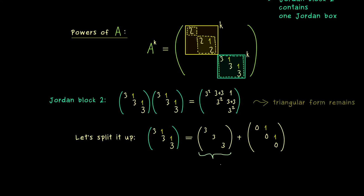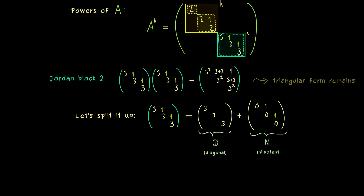Let's call the first matrix D for diagonal and the second one N for nilpotent. The term nilpotent means that some power of N is equal to the zero matrix. In this case, N squared is already really simple — it's the matrix that has zeros except for the corner in the top-right part, which is a 1. Therefore N cubed is already the zero matrix, and obviously all higher powers are zero as well. For a nilpotent matrix, we only have finitely many powers which are non-trivial.